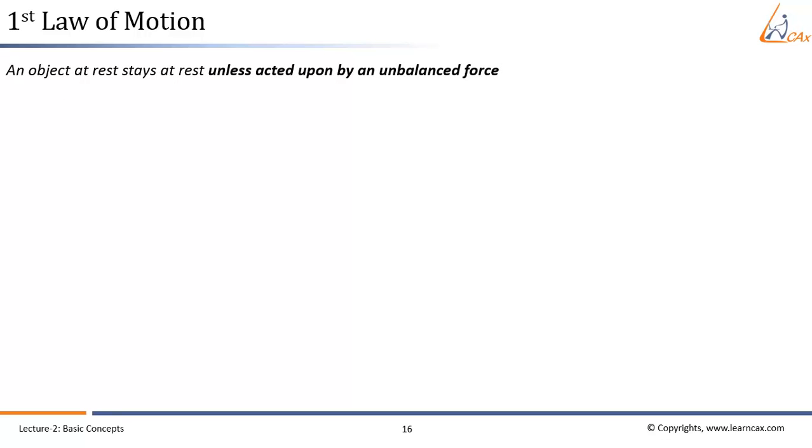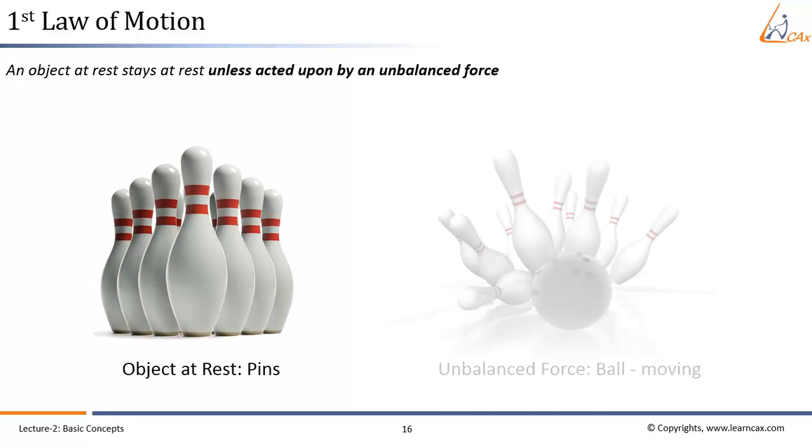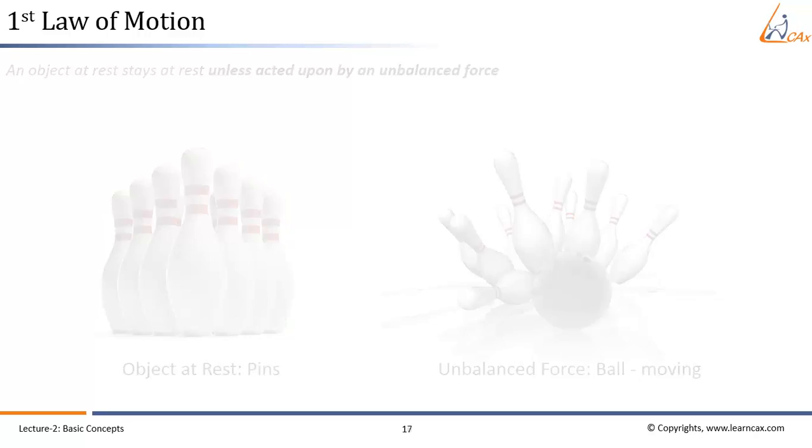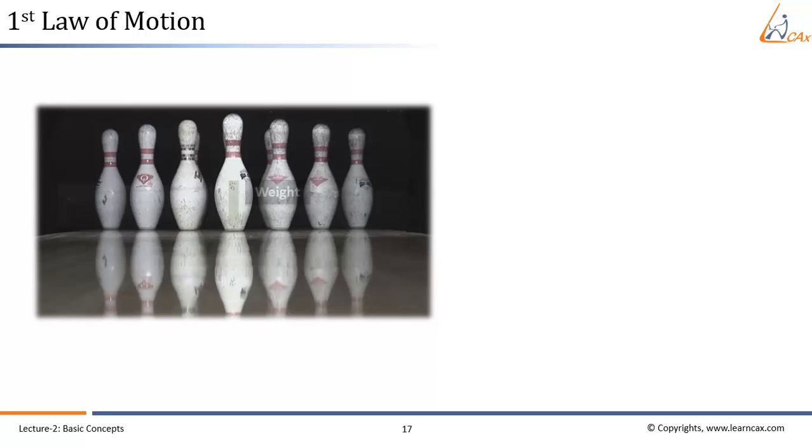Let us split this into two statements. An object at rest stays at rest unless acted upon by an unbalanced force. We have observed this in many situations. One such example is bowling. The pins which are at rest stay at rest unless they are hit by the bowling ball which is the unbalanced force here. To support the pin's weight, the normal force acting are equivalent to the weight of the pin. Hence, the forces are balanced and the pins continue to stay at rest.